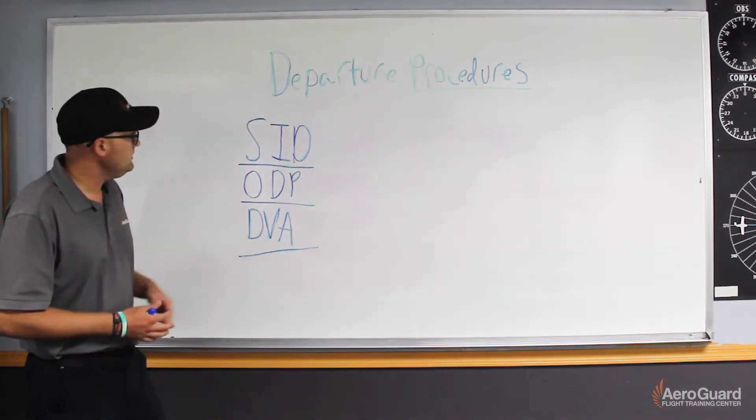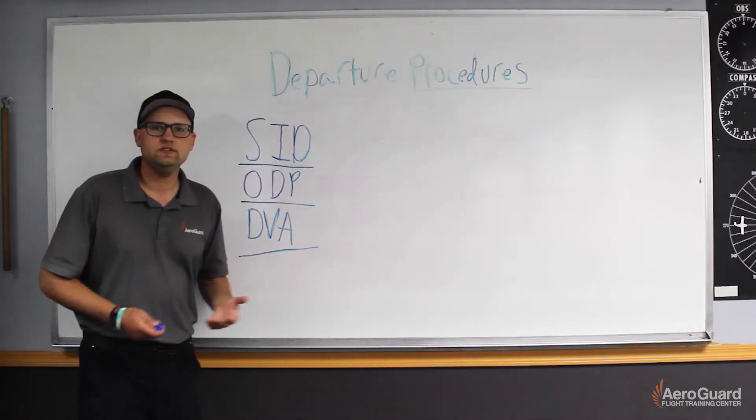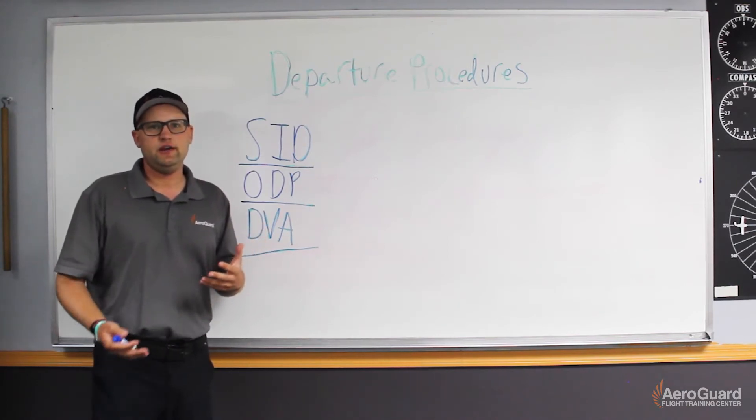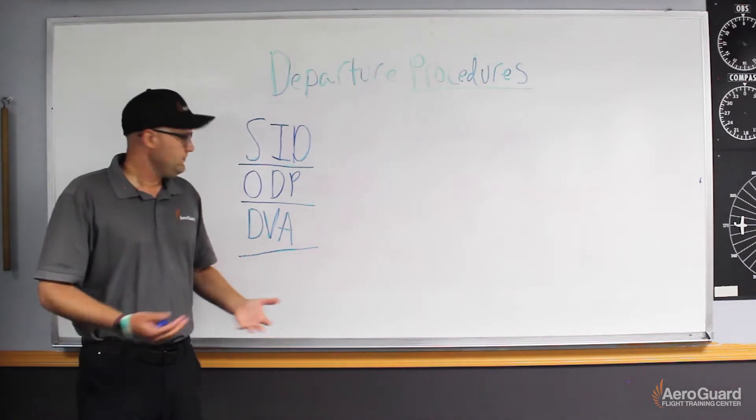The next one we're going to talk about is obstacle departure procedures. Obstacle departure procedures get your airplane to the en route phase of the flight over terrain in a safe manner. Here at Deer Valley I'd like to fly the Deer Valley One departure.